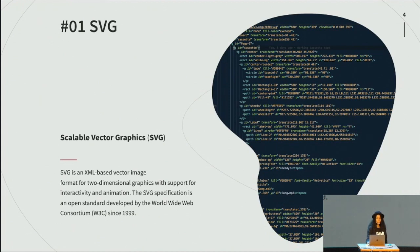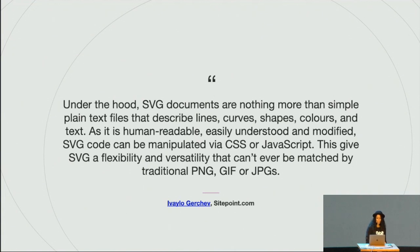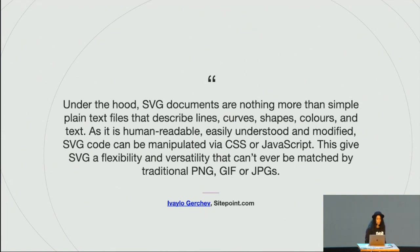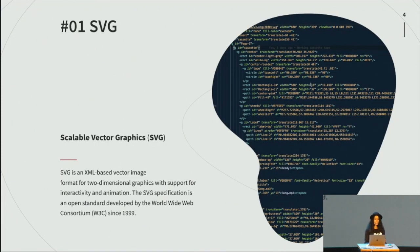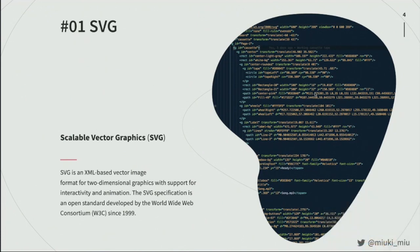This is the definition of an SVG from Wikipedia. It says it's an XML-based vector image format for two-dimensional graphics and so on. But I actually prefer this definition from Evilo from SitePoint. It says that under the hood, SVG documents are nothing more than simple plain text files that describe lines, curves, shapes, colors, and text — and they can be modifiable. Because we can expose the code, we can use CSS or JavaScript to change things.